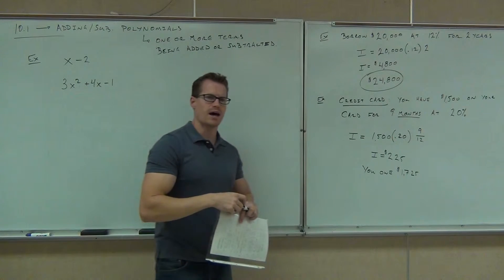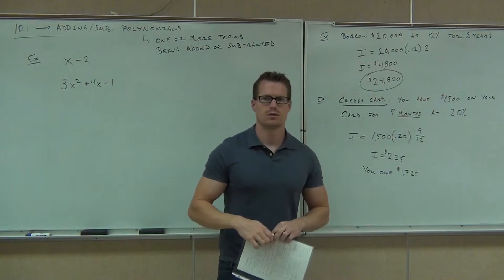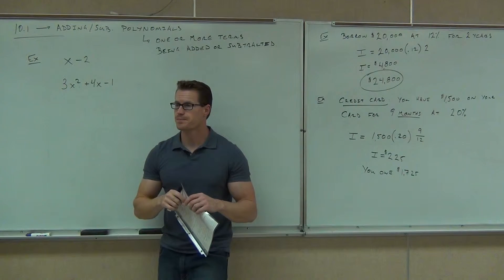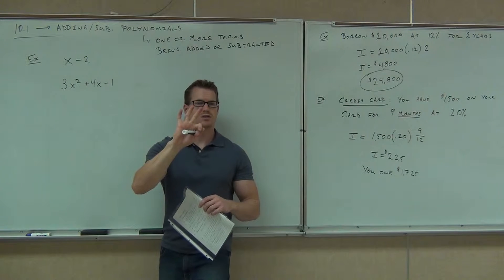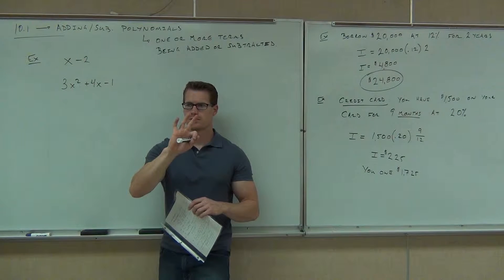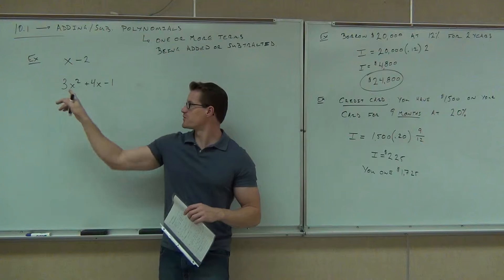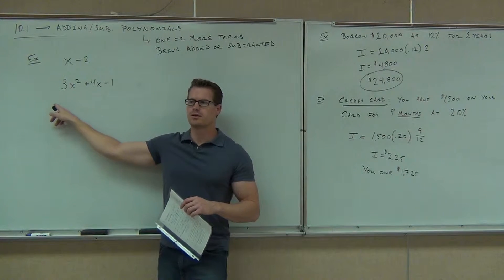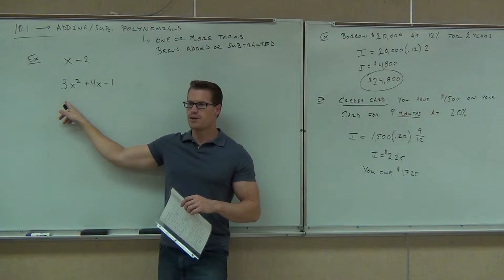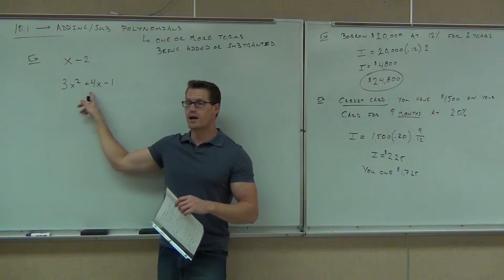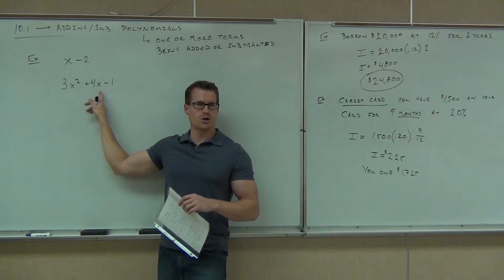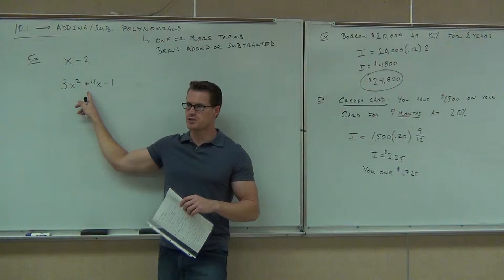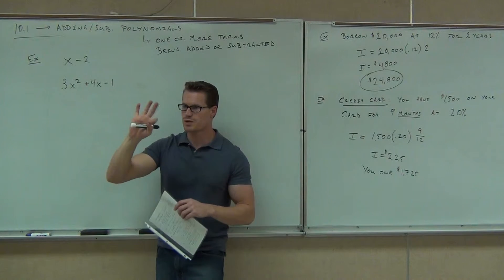It has two terms, x and negative 2. How about this one? How many terms does that have? Three. Terms are those things that are separated by pluses and minuses. Three terms. What's the first term? Three x squared. That makes the coefficient of the first term what? The coefficient's the number out front. Three. The next term is 4x. What's the coefficient there? Four. Goes with the sign, so positive four. The next term is a constant term. It's just a number. You'd have negative one. So there's three terms there.